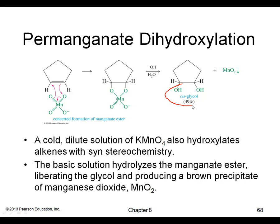With potassium permanganate, note that it gives the cis-diol. Another property is that it produces a manganese dioxide (MnO2) precipitate, so this is another way to detect whether your molecule had a double bond — you would start seeing this dark brown MnO2 precipitate form.